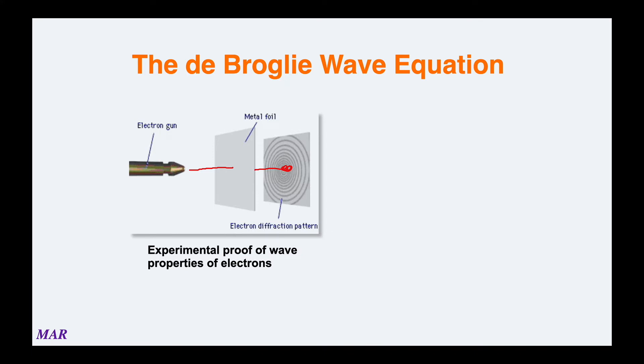If this was a true gun firing a bullet, you would think it would go through the metal foil and hit right there. But what you actually see is that concentric circle pattern, like if you've thrown a rock in a still pond, the waves emanate out. Electrons here are behaving like waves.